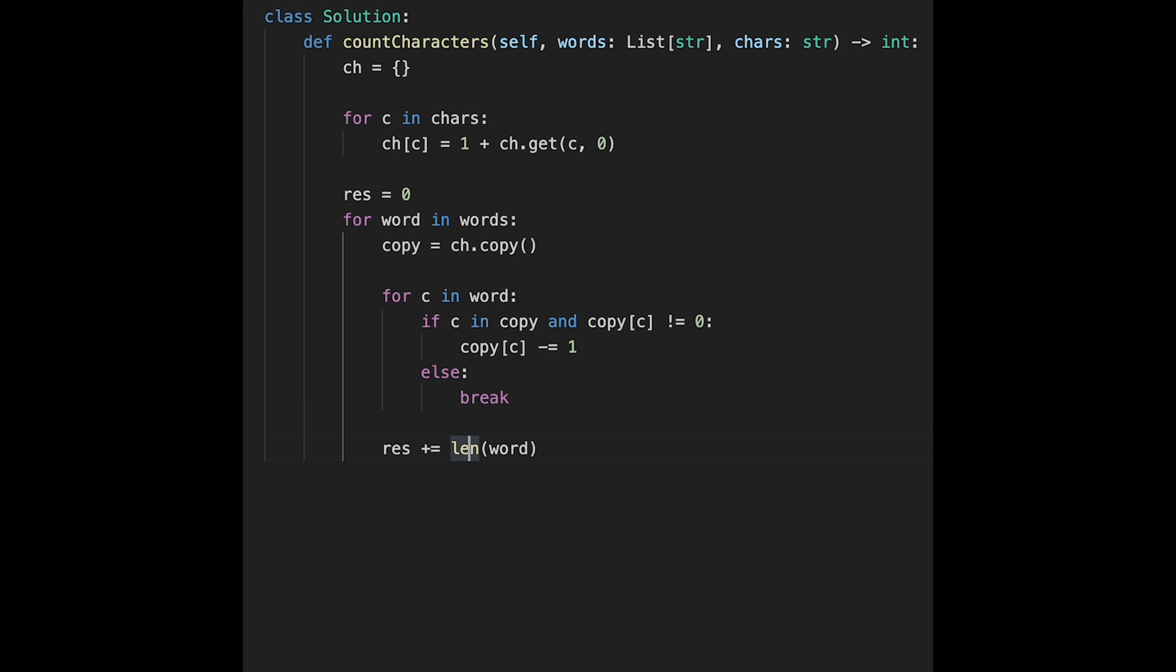But in this case, every word is added to result variable, right? I think there are several ways to avoid this. One is using a flag. Or I can take this way: if we have to break this for loop, so before that we subtract current length of word.